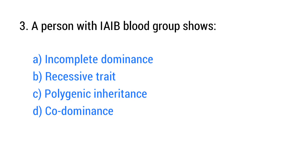Question number 3. A person with allele A and allele B blood group shows? The right answer is option D: Codominance.